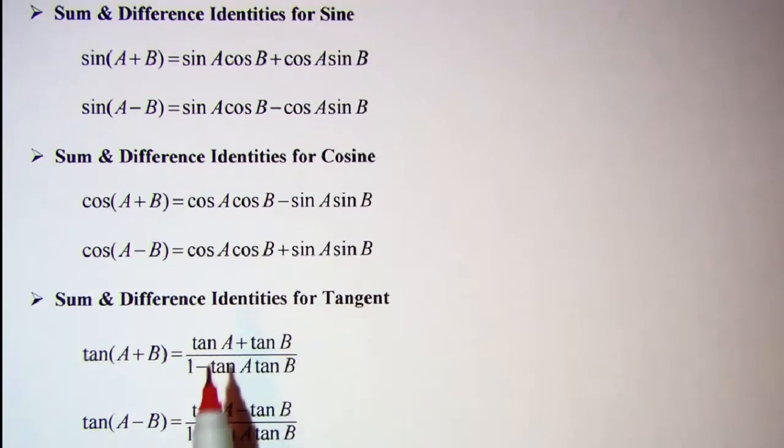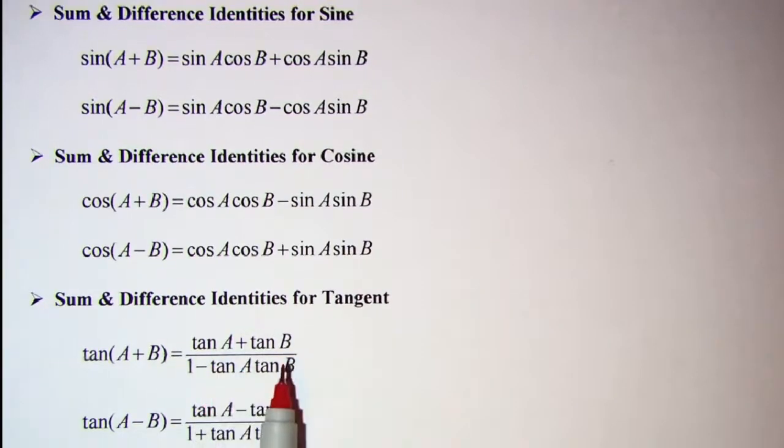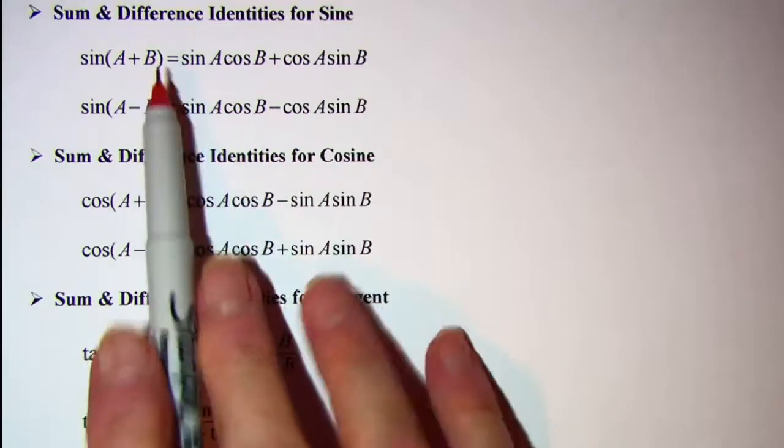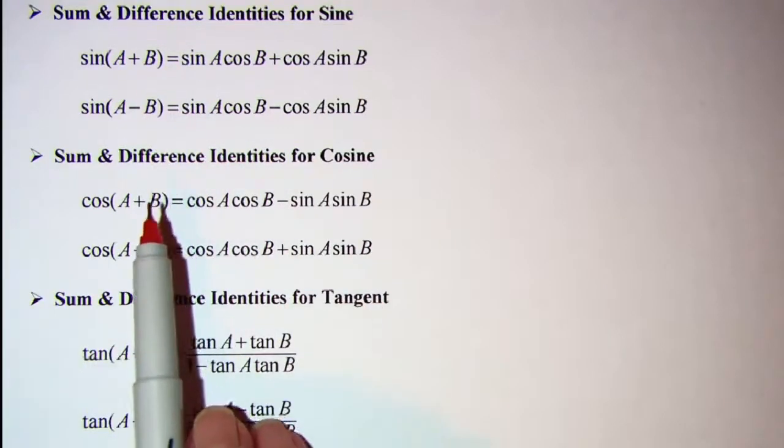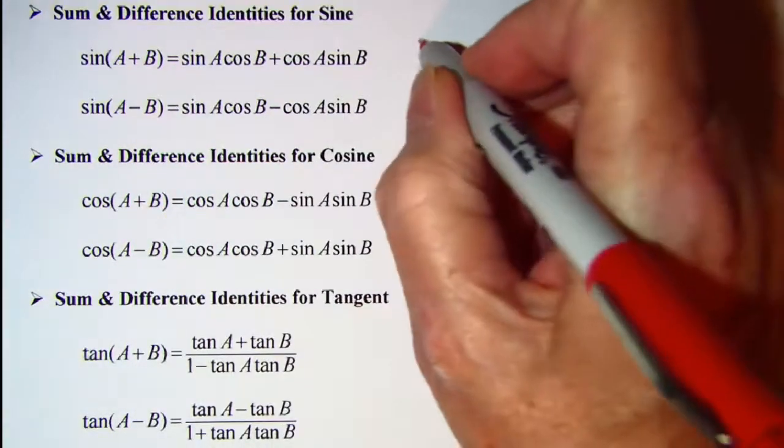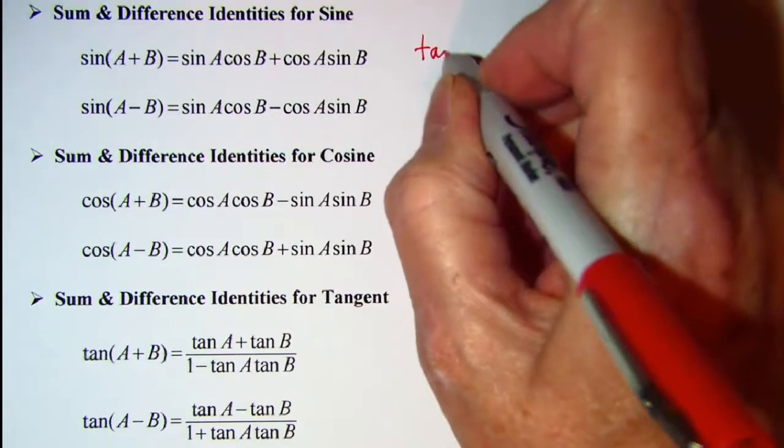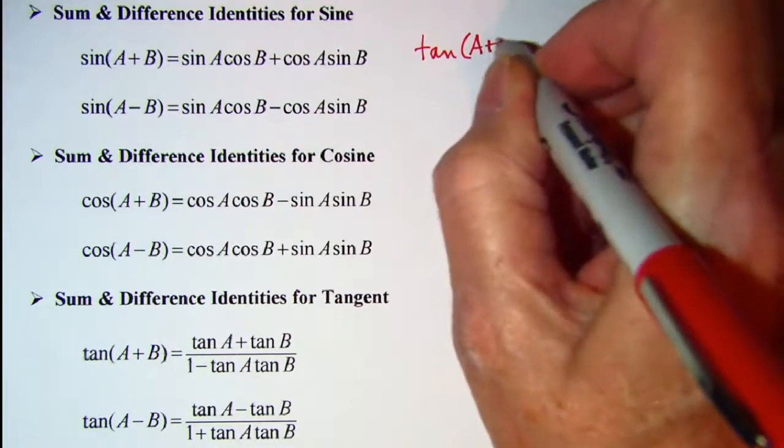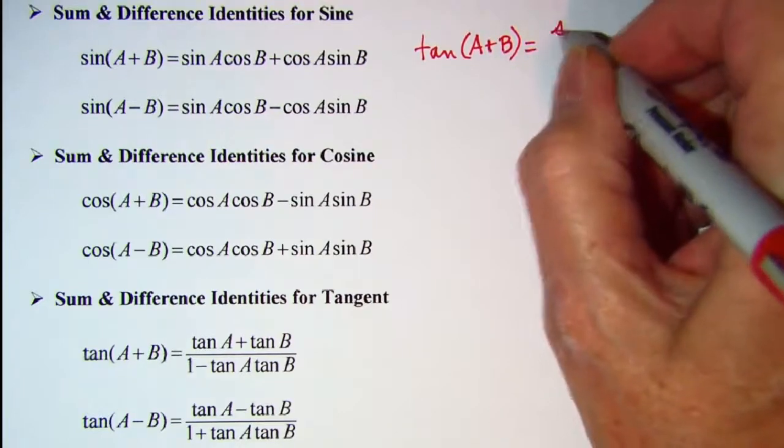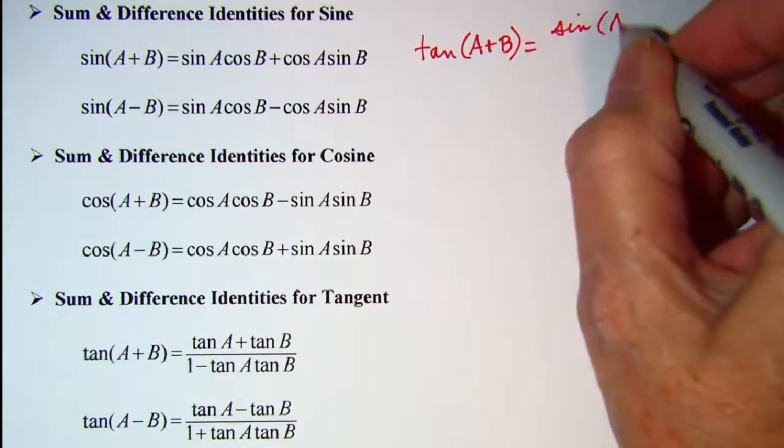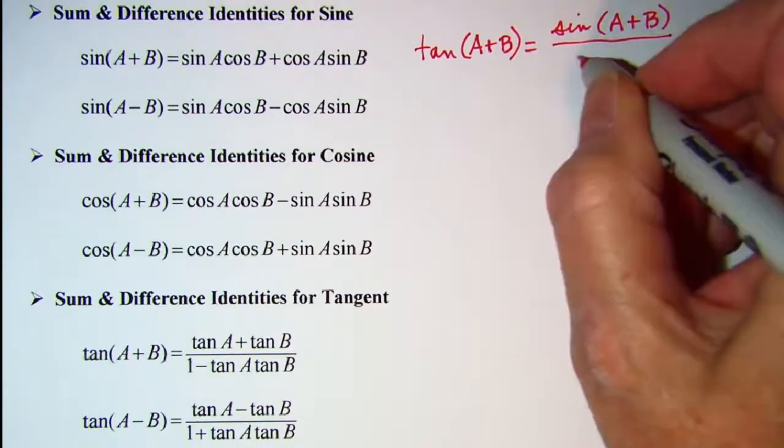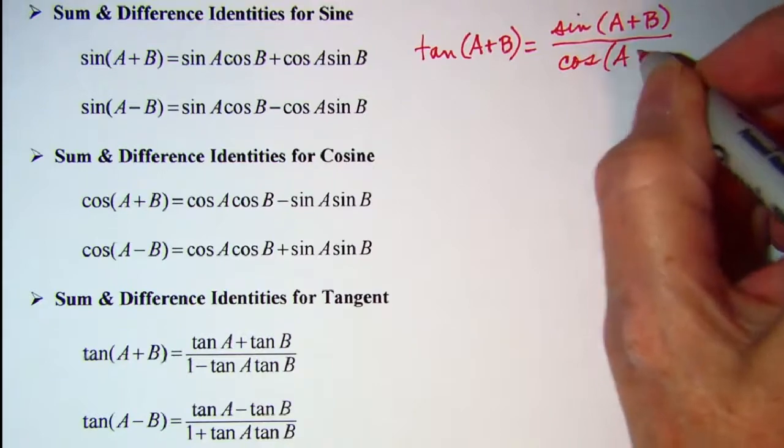Now the tangent identity, I want to show you how that can be derived if we have the sine and cosine identities memorized. We know that tangent of A plus B is the same as sine of A plus B over cosine of A plus B.